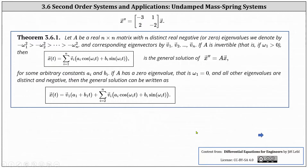Recall from our previous lesson: we can determine the general solution using the theorem that if A is a real n-by-n matrix with n distinct real negative or zero eigenvalues, denoted negative omega one squared greater than negative omega two squared and so on, with corresponding eigenvectors V one through V n, and if A is invertible, then x of t is the general solution of x double prime equals A times x. If A has a zero eigenvalue, we use an alternate form for the general solution.